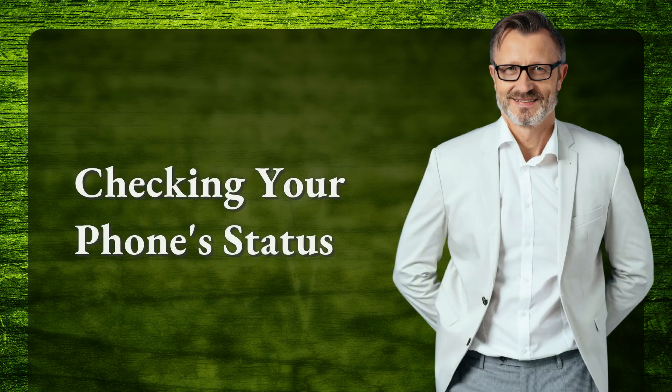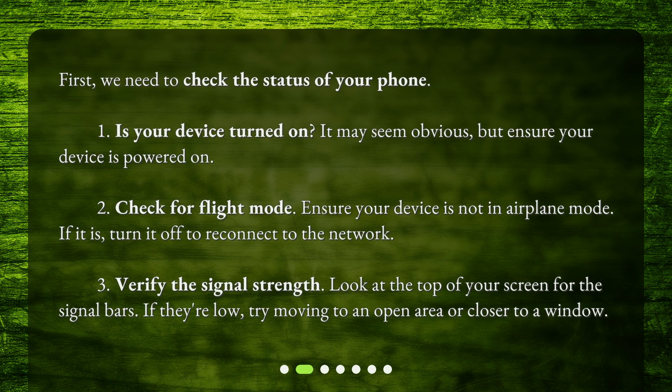First, we need to check the status of your phone. Ensure your device is powered on. Check for flight mode — ensure your device is not in airplane mode; if it is, turn it off to reconnect to the network. Verify the signal strength by looking at the top of your screen for the signal bars. If they're low, try moving to an open area or closer to a window.